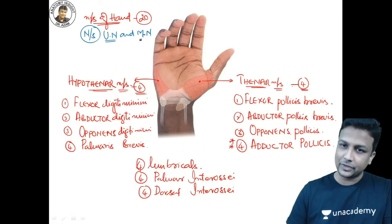Welcome to brachial plexus. There are three trunks: upper, middle, and lower. Injury to the upper trunk leads to Erb's paralysis — sign is policeman's tip hand. Injury to the lower trunk leads to Klumpke's paralysis — sign is claw hand. From C5, C6, C7 comes the long thoracic nerve; injury to the long thoracic nerve leads to winging of scapula.